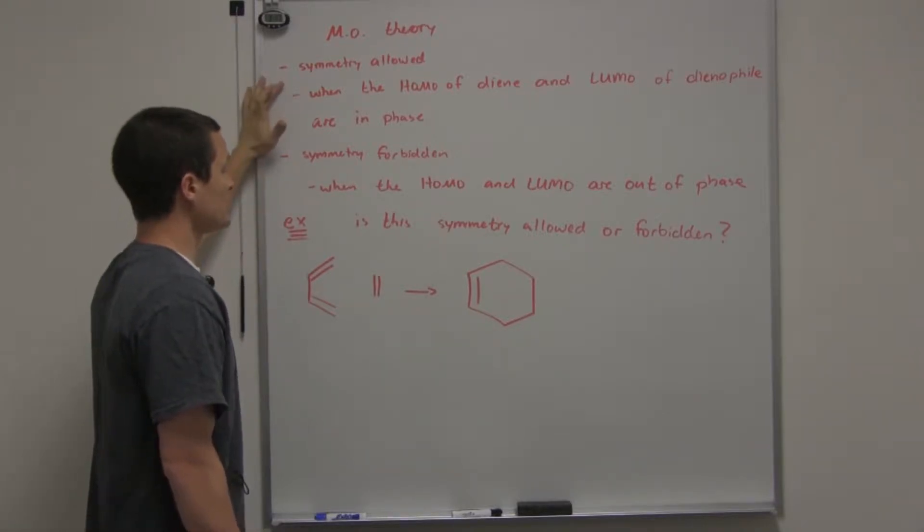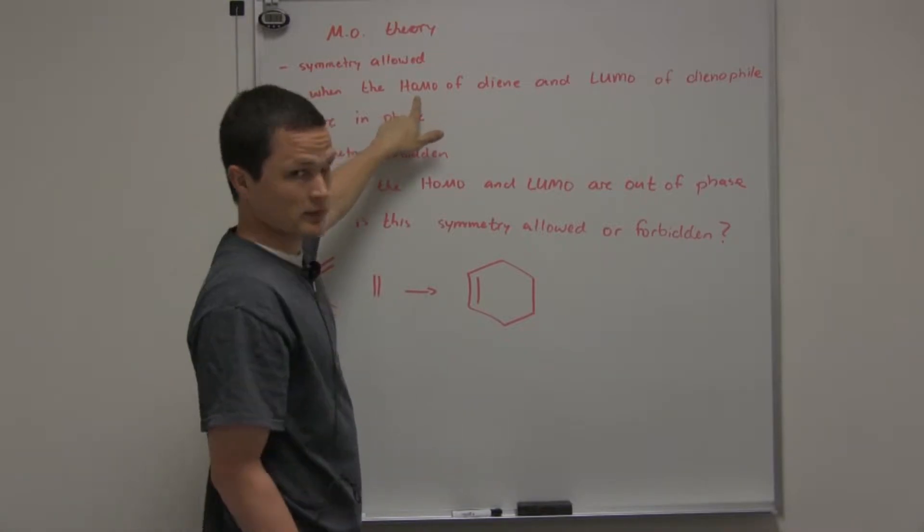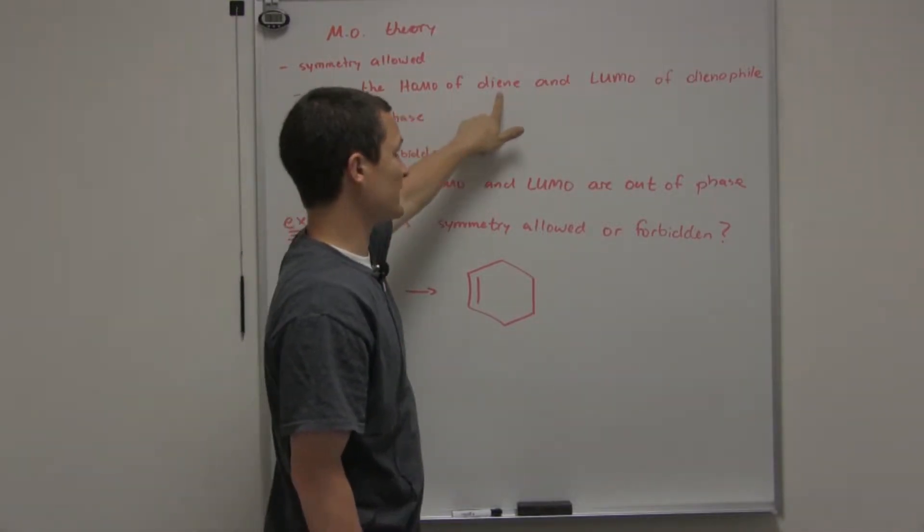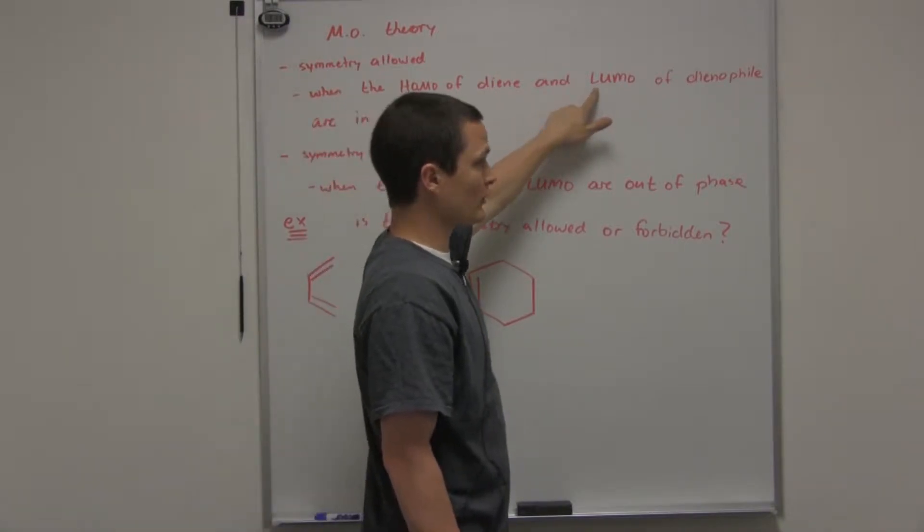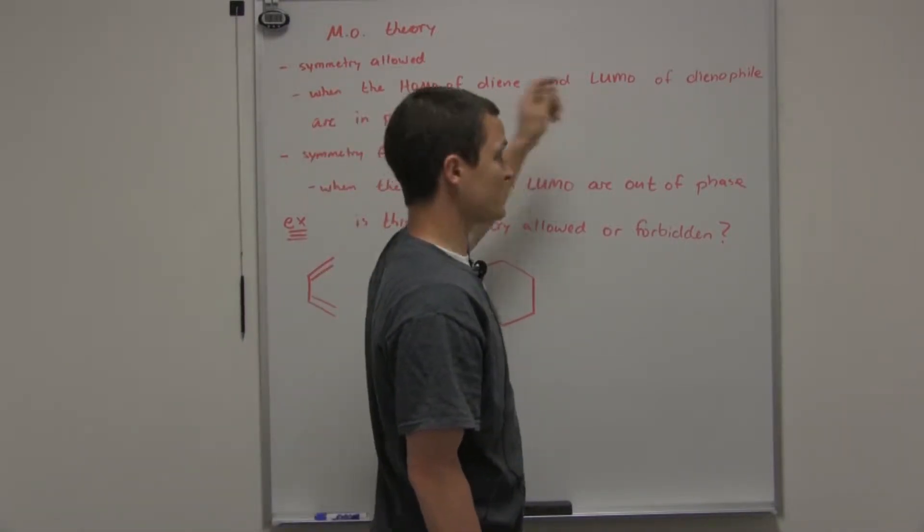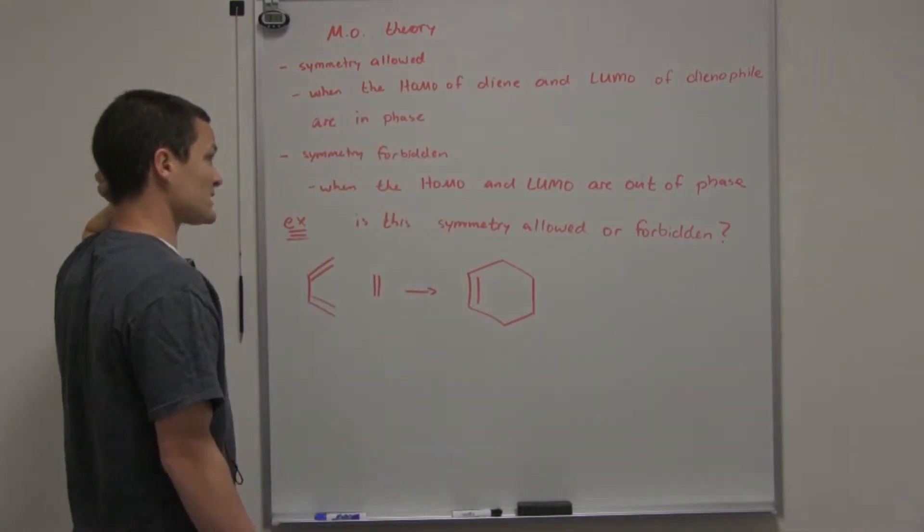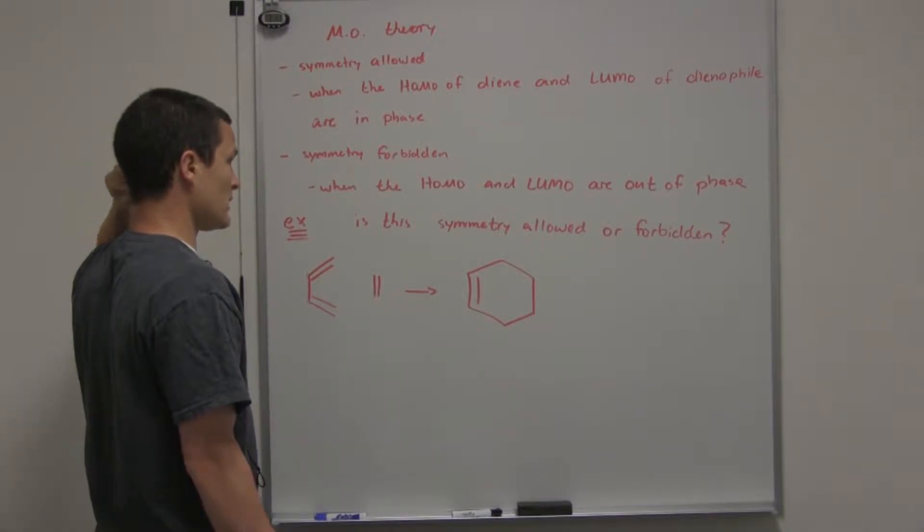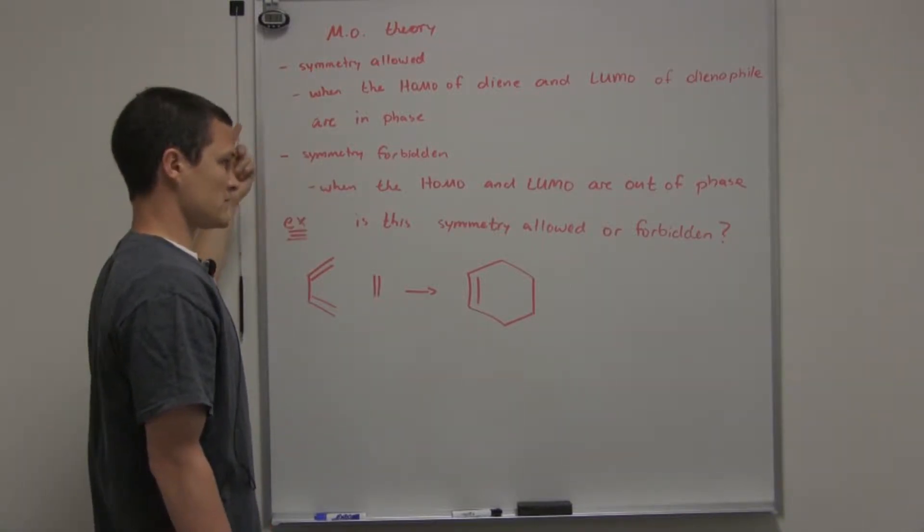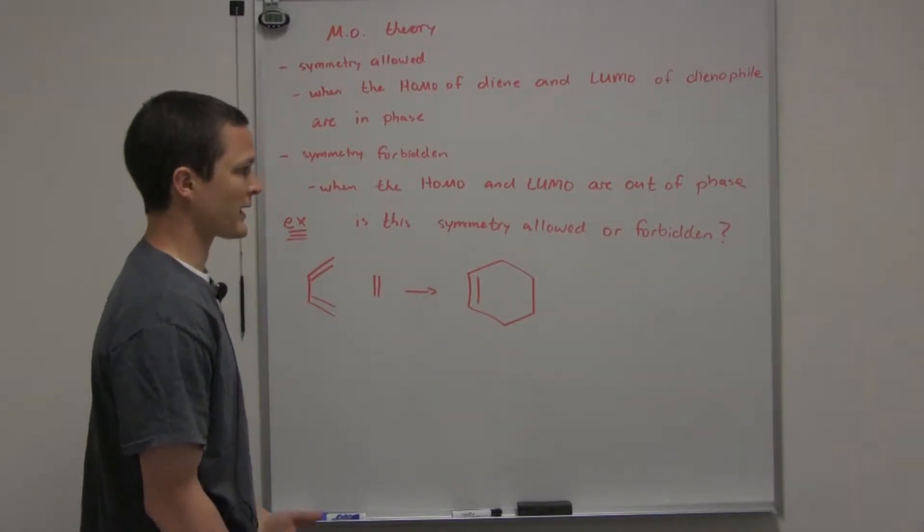So what does symmetry allowed mean? It means that the HOMO or the LUMO of the diene and the LUMO or the HOMO of the dienophile are in phase. I'll explain what that means in a minute, I'll draw some diagrams. Forbidden is the opposite of that. If they're out of phase, then the reaction will not go.